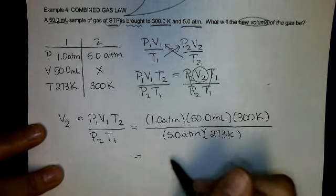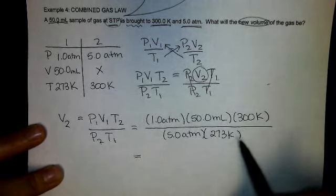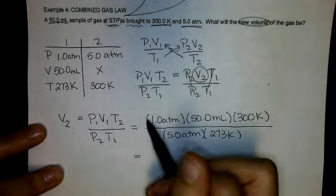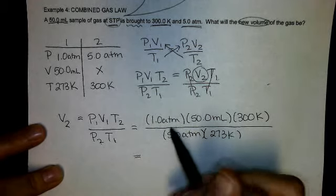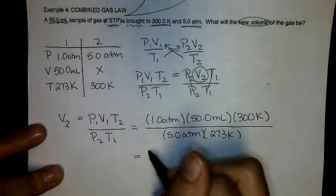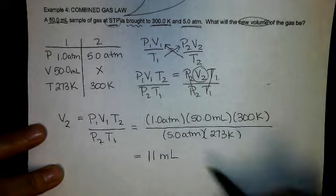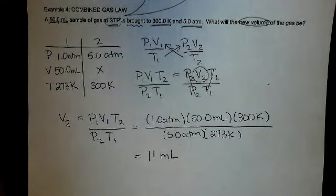And when I do this, I get 10.9 something. But I need to round to my lowest number significant figure. My 1 atmosphere, my 5 atmospheres. So I round to 2, I get 11 milliliters.